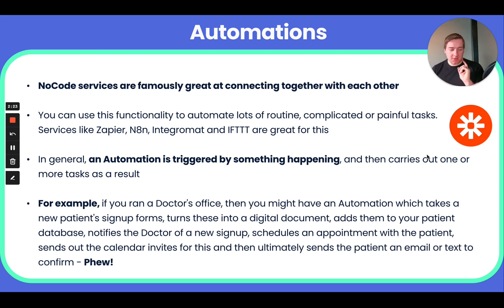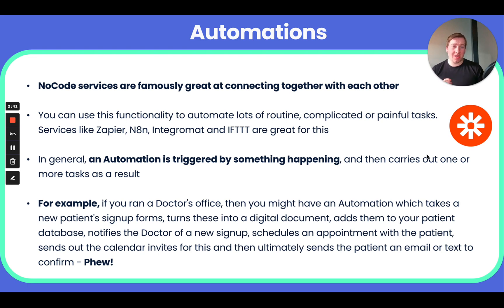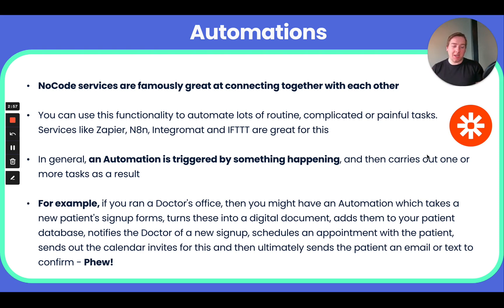There's a tool called Zapier — you can see the logo right underneath the picture of me — and it's an incredible tool that lets you connect tons of different services together, like Google Calendar, PayPal, QuickBooks. Literally anything you can think of, there's a very good chance that service is available on Zapier. It lets you connect them together to do various things entirely without writing any code. Generally, an automation works like this: something gets triggered, some sort of event happens, and as a result one or more tasks are carried out.